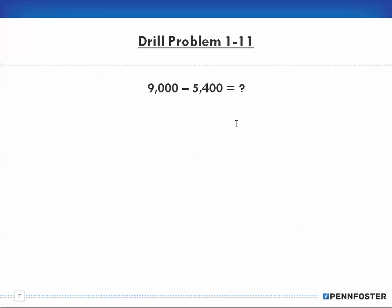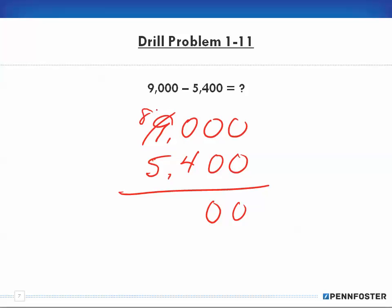Drill problem 1-11. 9,000 minus 5,400. This is a good one. 0 from 0 is 0, 0 from 0 is 0. 4 from 0, we can't take 4 from 0, so we have to borrow. That makes that an 8, and that makes that 10. So now 4 from 10 is 6, and 5 from the 8 is 3. The answer is 3,600.